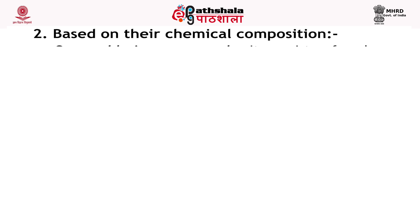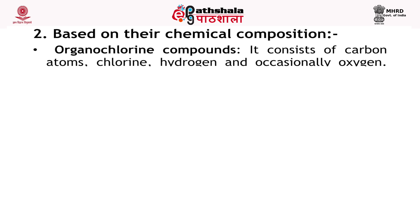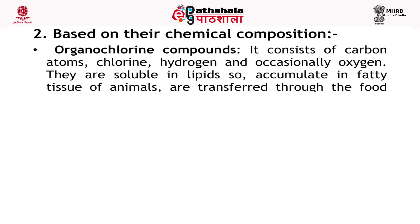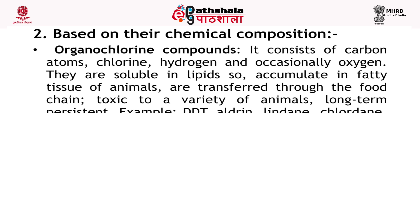Based on their chemical composition: organochlorine compounds consist of carbon atoms, chlorine, hydrogen and occasionally oxygen. They are soluble in lipids, so they accumulate in fatty tissues of animals and are transferred through the food chain. They are toxic to a variety of animals and long-term persistent. Examples include DDT, Aldrin, Chlordane and Mirex.